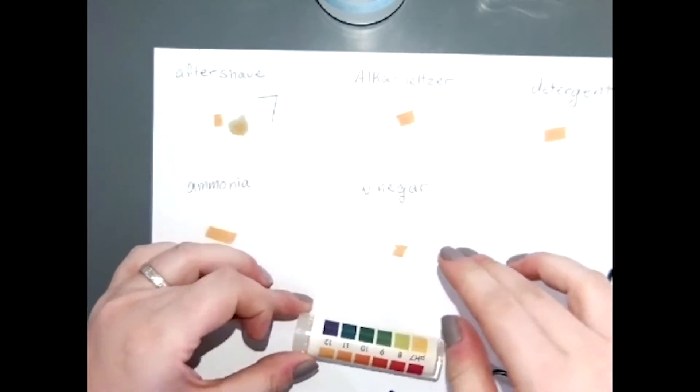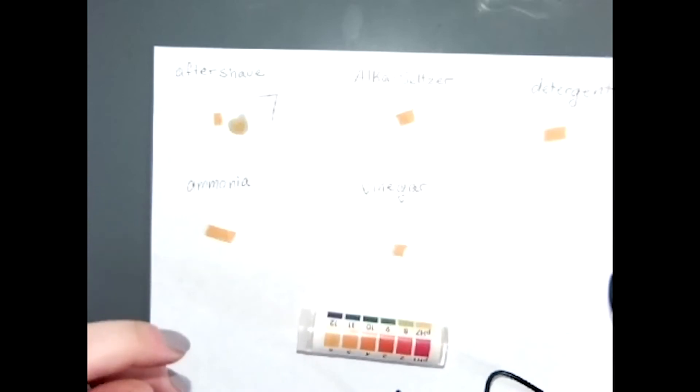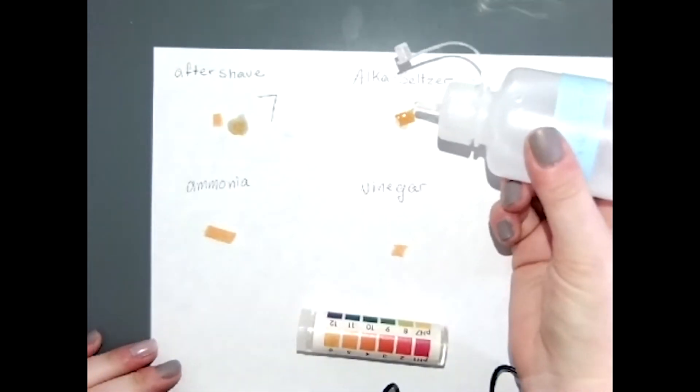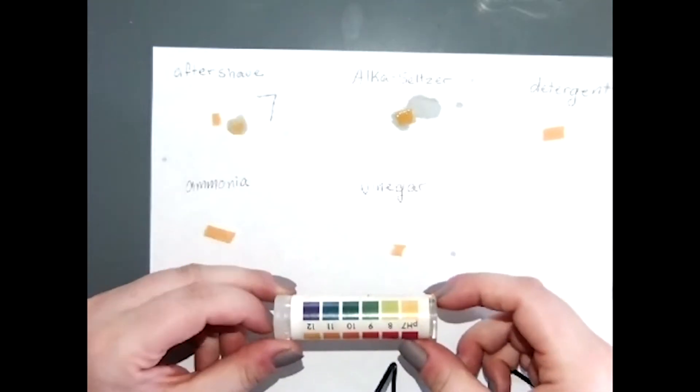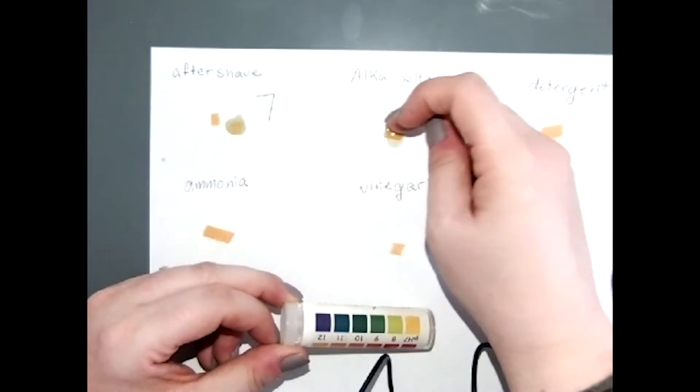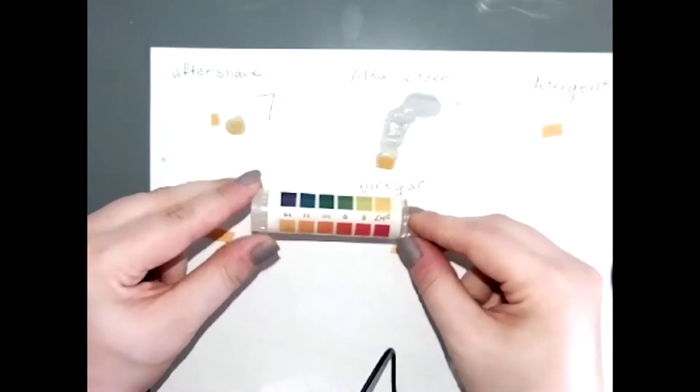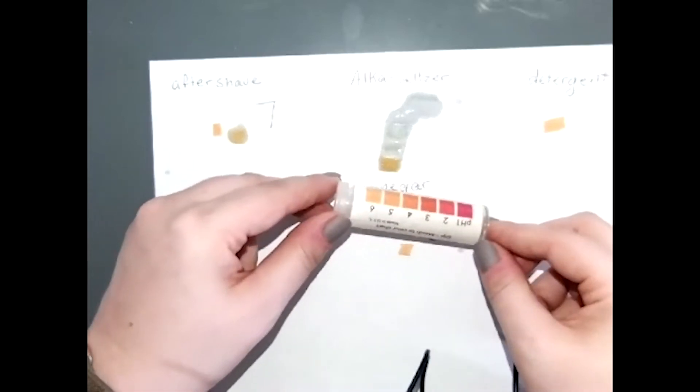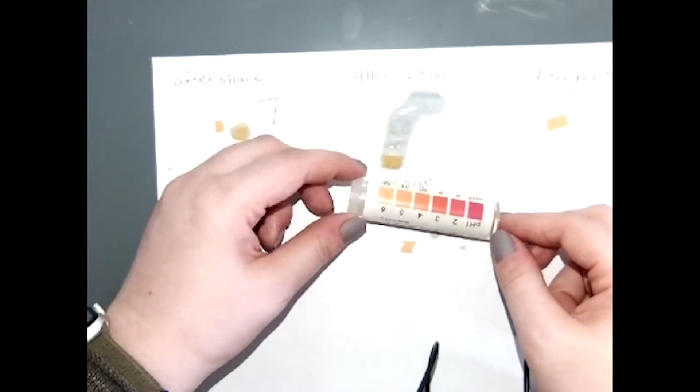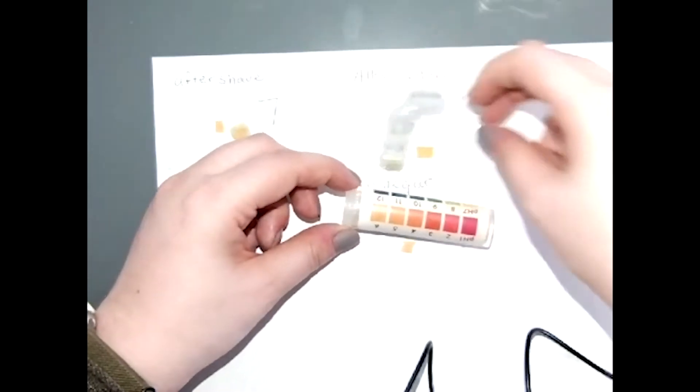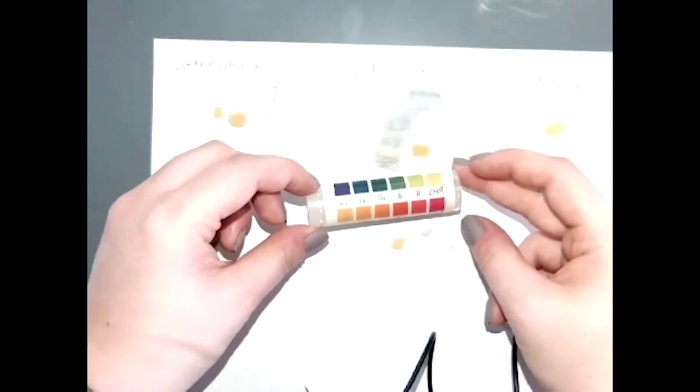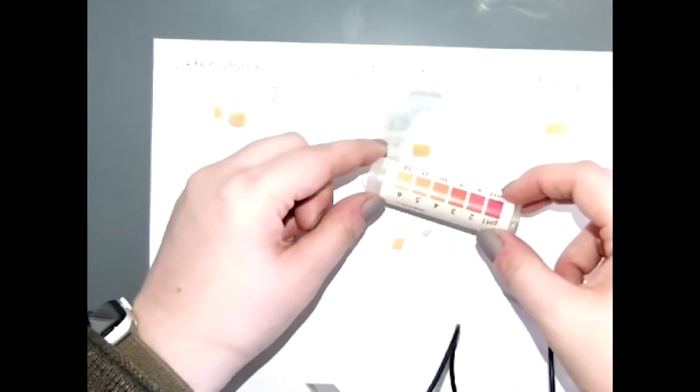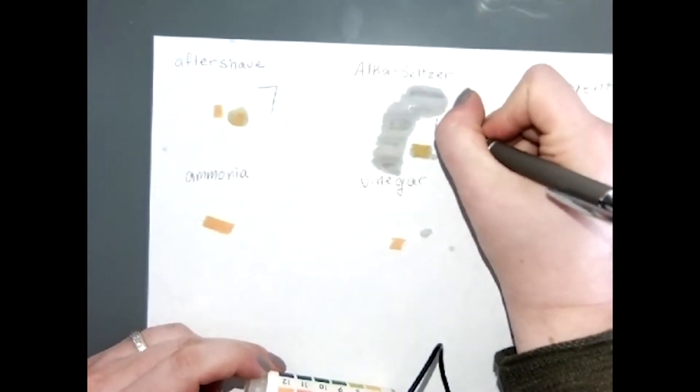Next we have our alka-seltzer. It's very foamy. Place a few drops on the paper. Let's say that that's somewhere between a six and a seven, so we'll call that six and a half.